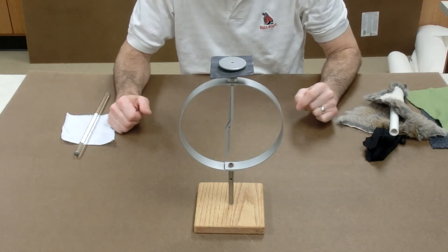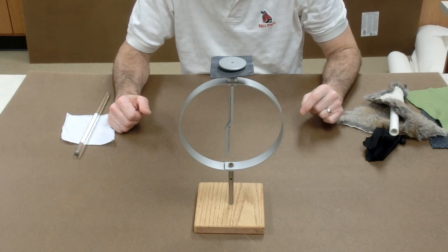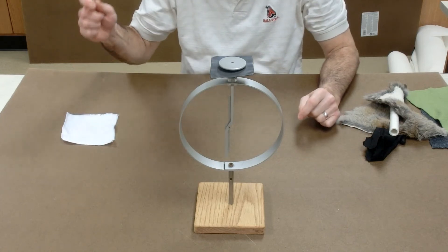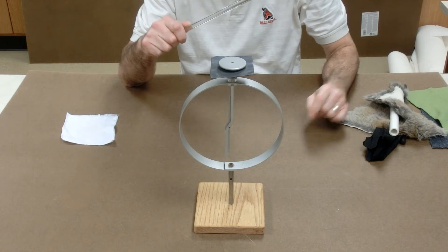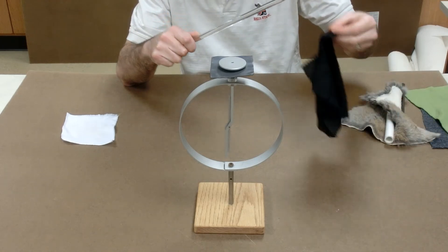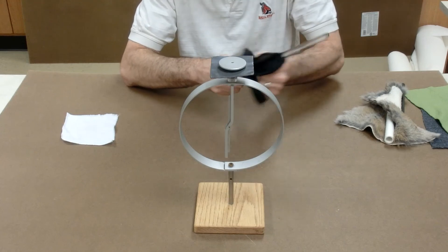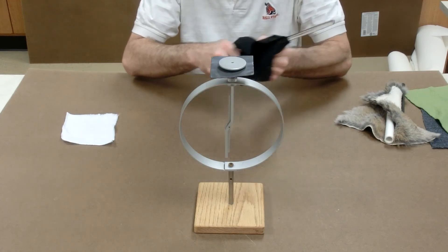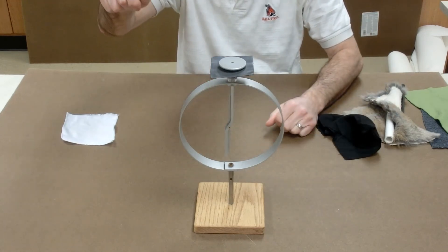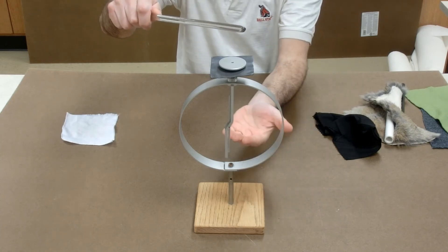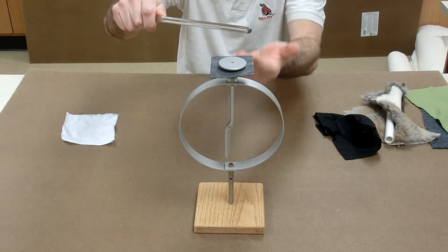If we wanted to make the electroscope negatively charged by induction, we would have to use a positively charged glass rod. Again, this isn't going to work, but I'll still go through the steps. The positively charged glass rod would be brought near the knob of the electroscope. It would attract electrons up to the knob.